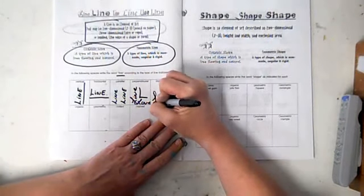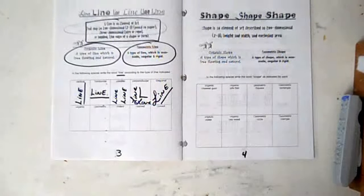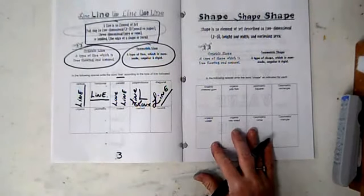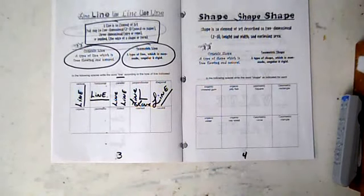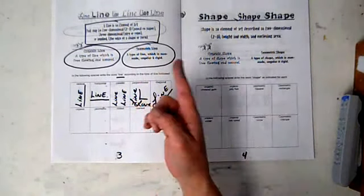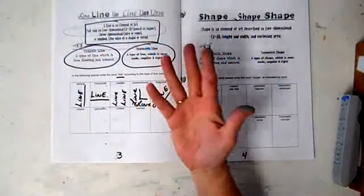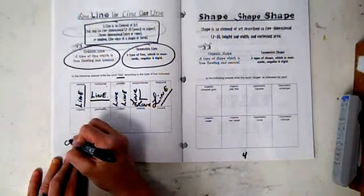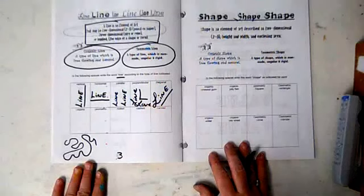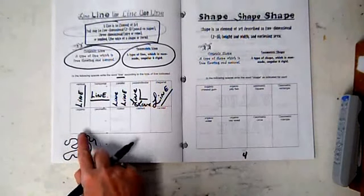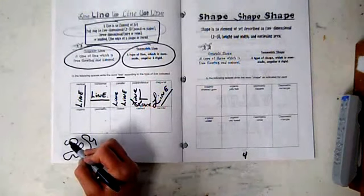Write the word line diagonal. Organic: draw an organic line in the air. Organic is free-flowing and natural, so an organic line would be like this. If you were flying an airplane above a river, it might look like this down below. Water is very organic.